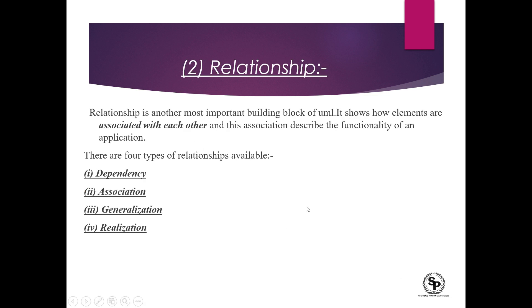The second building block is relationship, which is another most important building block of UML. It shows how elements are associated with each other, and this association describes the functionality of an application. Relationship shows that one element is dependent on another, or associated with another, or generalized by another, or realized by another element.